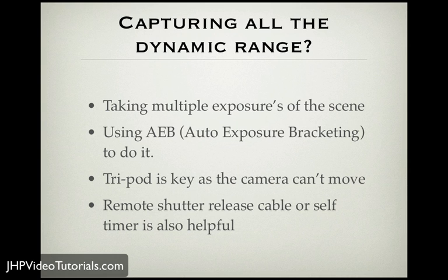The best way to capture all that dynamic range is by using the auto exposure bracketing feature on your camera. On my Canon it's called AEB — auto exposure bracketing. Nikon has the same feature. Basically, it allows you to take multiple exposures in a row, like negative two, zero, and plus two. Also, a tripod is key because you're taking multiple exposures and you don't want your camera to move. A remote shutter release cable or self-timer lets you fire the shots without touching the camera — you don't want any camera shake whatsoever.